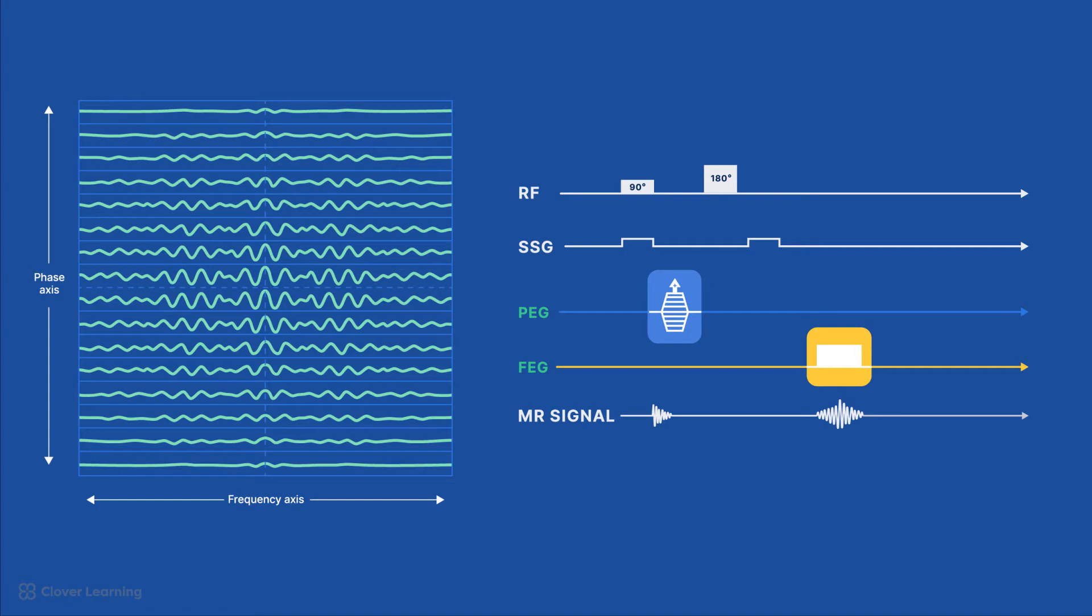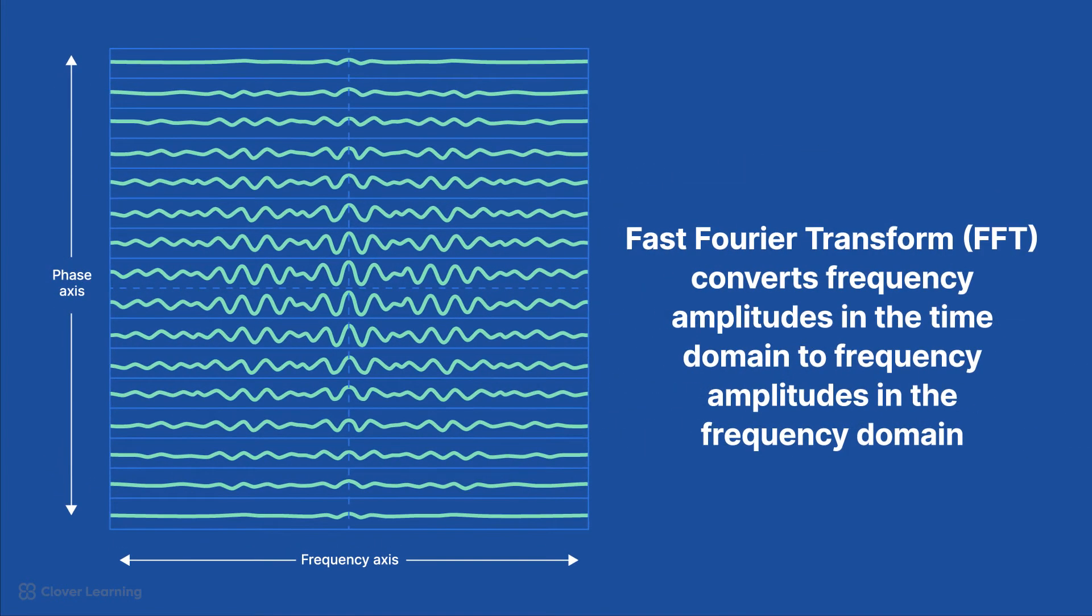After the k-space matrix is filled, a complex mathematical process called the Fast Fourier Transform, or FFT, is applied to convert frequency amplitudes in the time domain to frequency amplitudes in the frequency domain, thus producing an image.